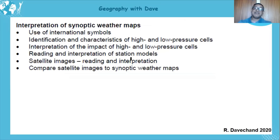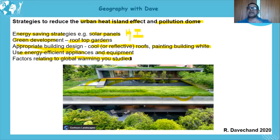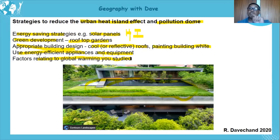You must give the full answer: use public transport, therefore it will result in less vehicles on the road, less carbon emissions. Factors relating to global warming can also be included, but you must relate them to the heat island effect and how they reduce temperatures. That's your urban climate — I hope it has assisted you. All the best, goodbye!